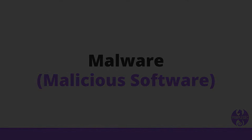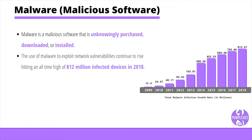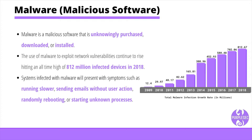Malware is a malicious software that is unknowingly purchased, downloaded, or installed. The use of malware to exploit network vulnerabilities continues to rise, hitting an all-time high of 812 million infected devices in 2018. Systems infected with malware will present with symptoms such as running slower, sending emails without user action, randomly rebooting, or starting unknown processes.